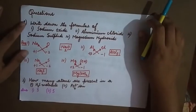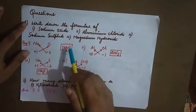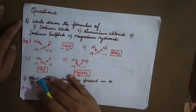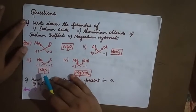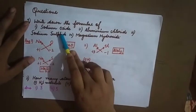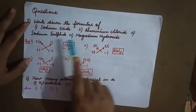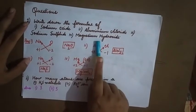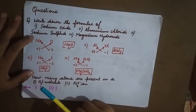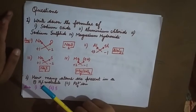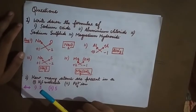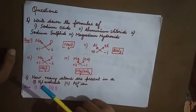Good morning students. Today we will be going through a few questions with respect to this particular chapter. Write down the formulae of sodium oxide, aluminium chloride, sodium sulfide, and magnesium hydroxide. To construct the formulae, the very important thing you need to remember is to know the valency — the combining capacity and the symbol of the elements.